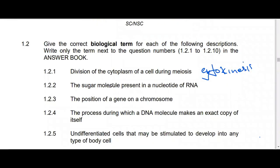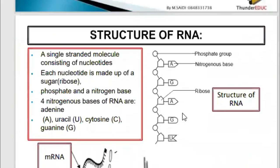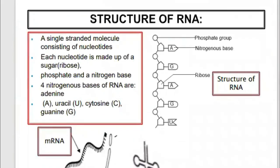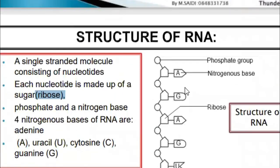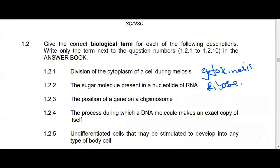The sugar molecule present in the nucleotide of RNA — the kind of sugar found there is ribose. Going back to our book on RNA structure: 'the molecule consists of nucleotides, each nucleotide is made up of a sugar called ribose.' So ribose is the sugar located in RNA.